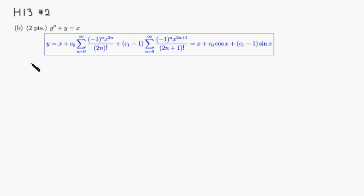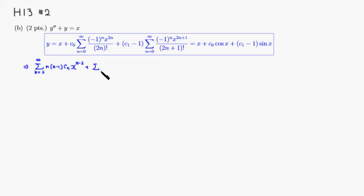Our second derivative is the summation from n equals 2 to infinity of n times n minus 1 times cn times x to the n minus 2, plus y, which is just a summation from 0 to infinity of cn times x to the n. This is all equal to x.